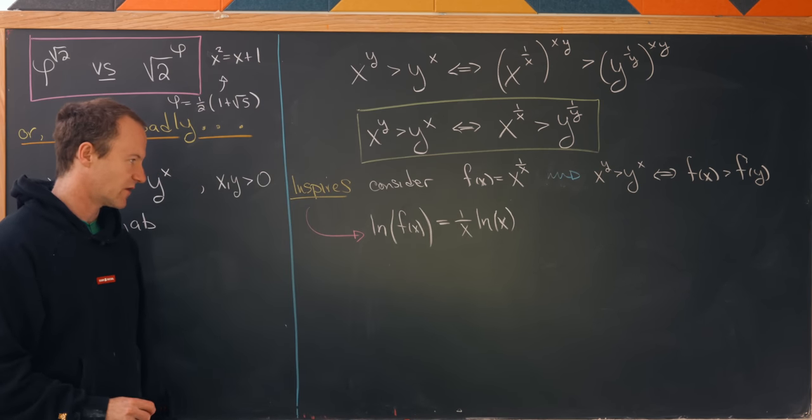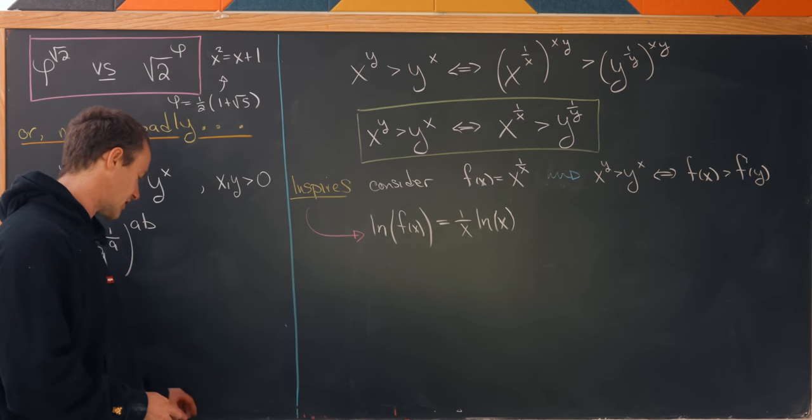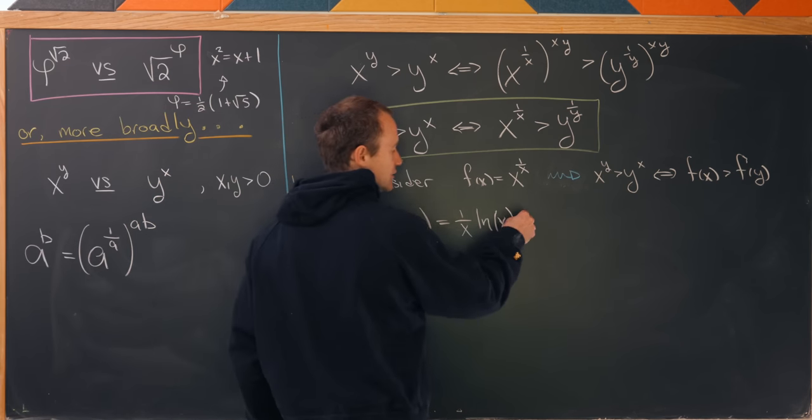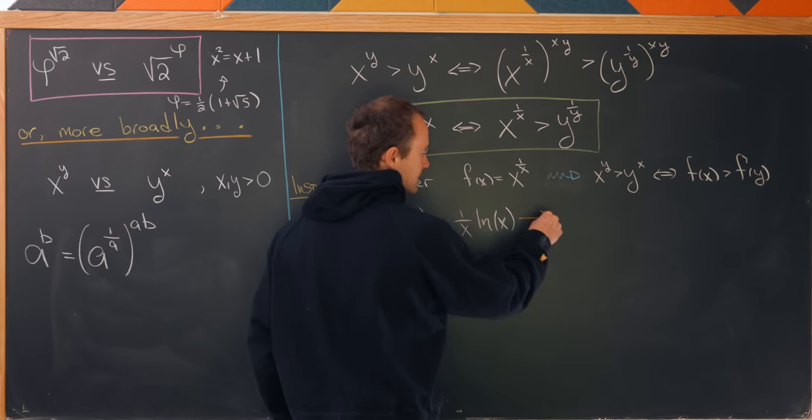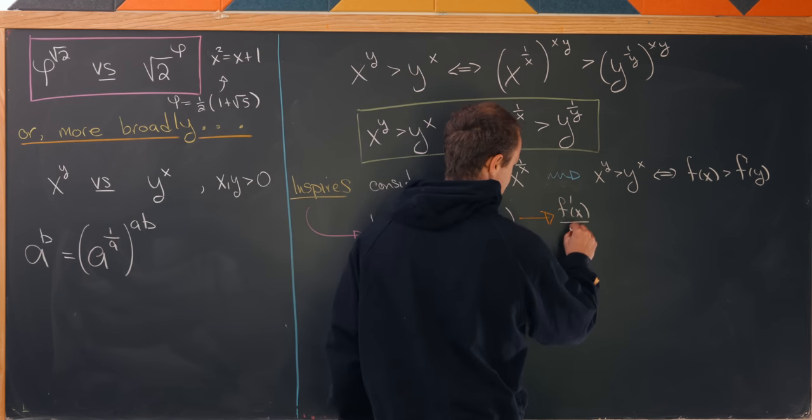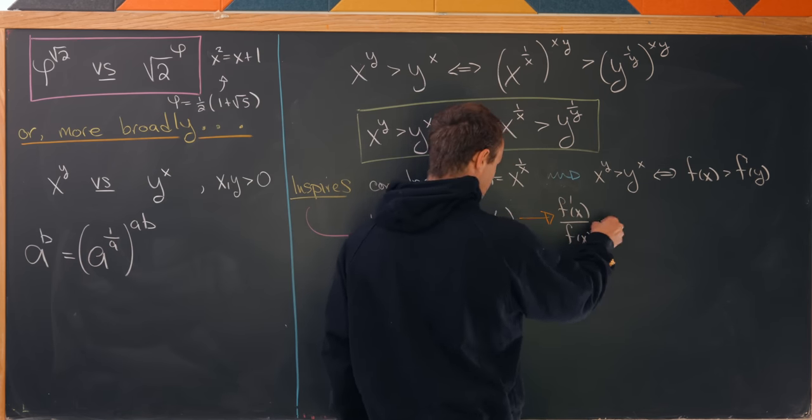So if we take the log of both sides we'll see that the natural log of f of x is exactly 1 over x times the natural log of x using logarithm rules. And now we can take the derivative and that'll leave us with f prime of x over f of x equals,